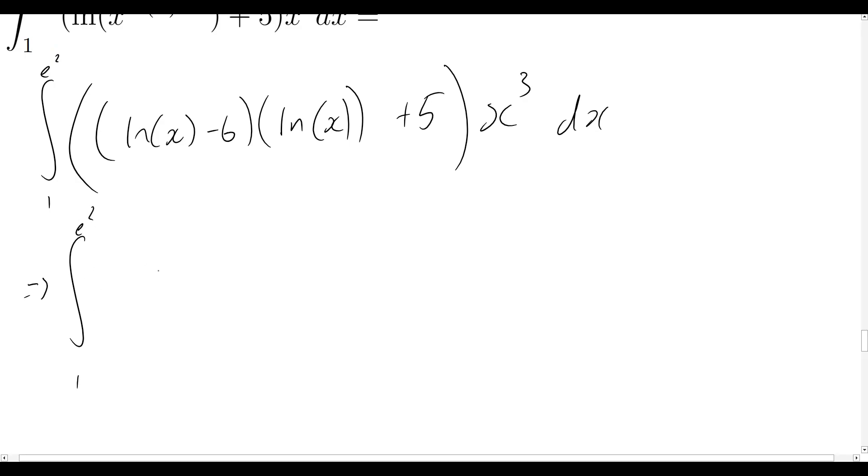This will now become, again, integral 1 to e squared. And we'll say natural log squared of x minus 6 times the natural log of x and plus 5. And again, we've got x cubed on the end there.